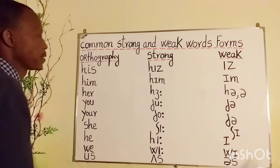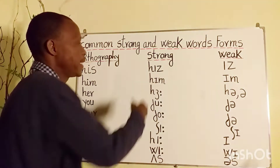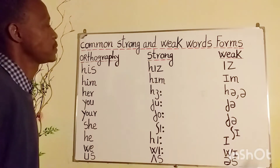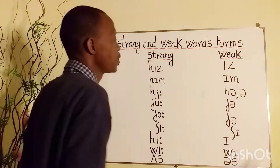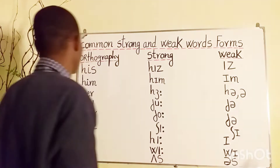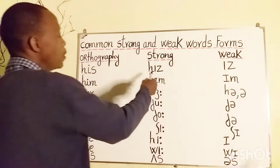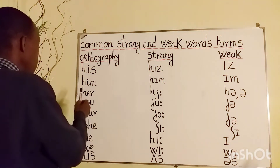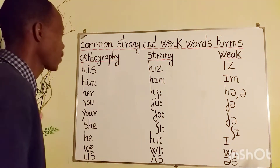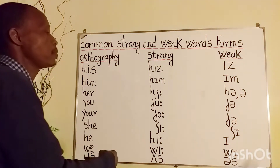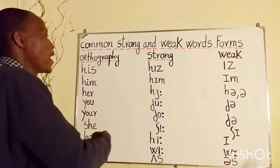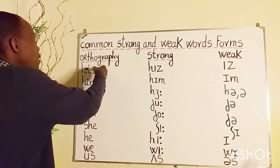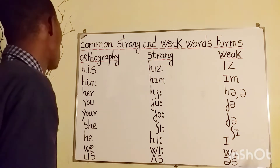Orthography: 'his' — strong form: his, weak form: is. 'Him' — strong form: him, weak form: him. 'Her' — strong form: her, weak form: her. As you can notice, you just drop the H to get the weak form of these three pronouns.